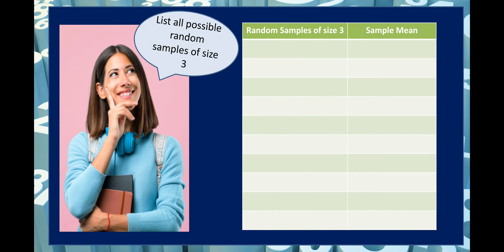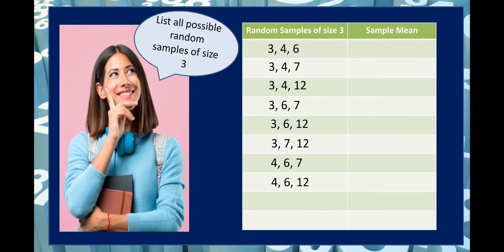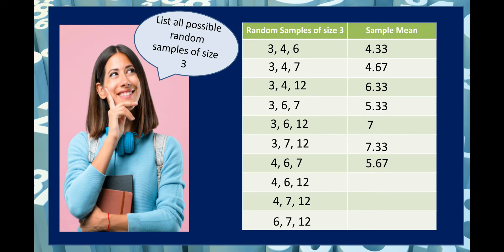Listing all possible random samples of size 3: {3,4,6}, {3,4,7}, {3,4,12}, {3,6,7}, {3,6,12}, {3,7,12}, {4,6,7}, {4,6,12}, {4,7,12}, and {6,7,12}. Computing the sample means: 4.33, 4.67, 6.33, 5.33, 7.00, 7.33, 5.67, 7.33, 7.67, and 8.33. Note that the sample mean 7.33 appears twice — for samples {3,7,12} and {4,6,12}.